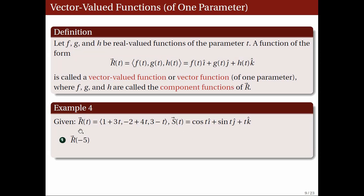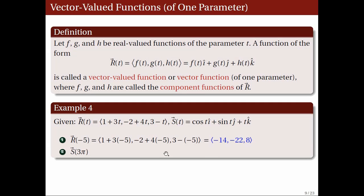The value of the function r at negative 5 is just the vector with components 1 plus 3 times negative 5, negative 2 plus 4 times negative 5, and 3 minus negative 5, or the vector with components negative 14, negative 22, and 8. Meanwhile, the value of the function s at 3π is just the vector with components cosine 3π, sine 3π, and 3π, or negative 1, 0, 3π.